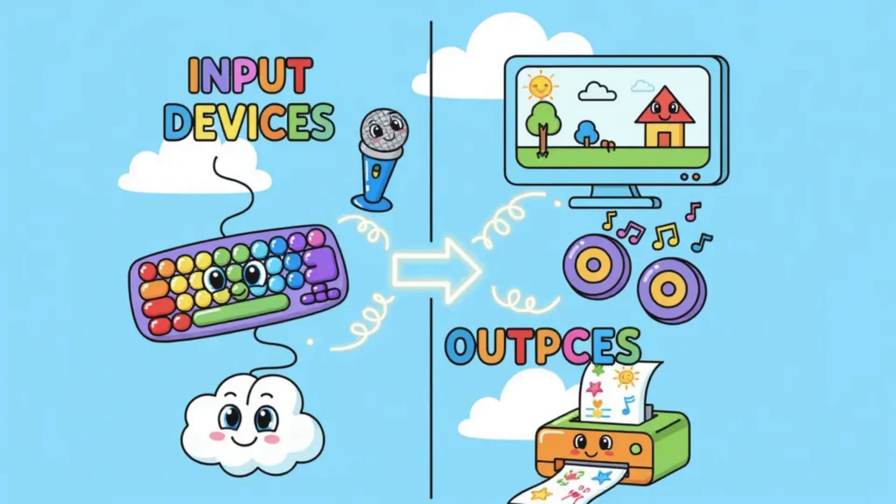The monitor, for example, is the screen where we can see everything the computer is doing. It displays text, images, videos, and even animations. The speakers are another important example, since they let the computer produce sound, music, or even voices, making it possible for us to listen and enjoy audio.